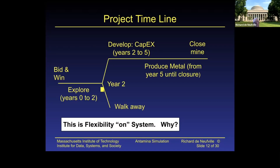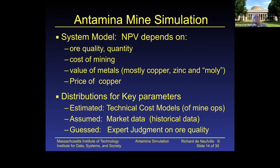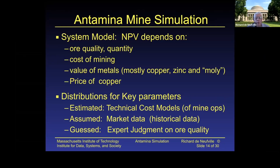The flexibility was the option to walk away. At this level, it didn't say whether you designed the mine one way or another — it was simply: is it worthwhile? This is where the flexibility analysis and the simulation came in. The NPV depended on a lot of things: the ore quality and quantity — was it two percent copper, one percent copper? What other materials might be associated, and how valuable might they be? What was the cost of mining?